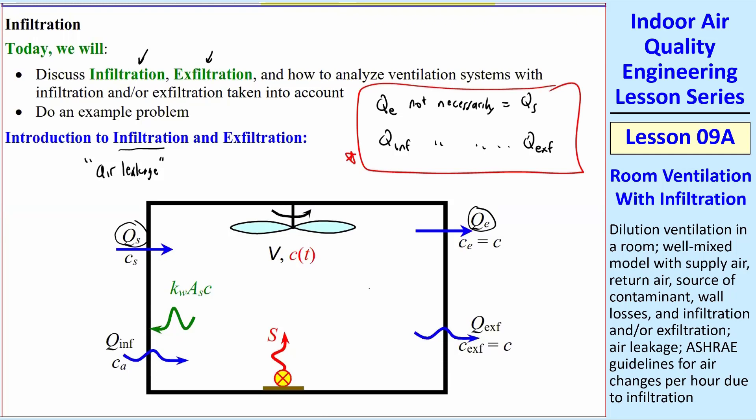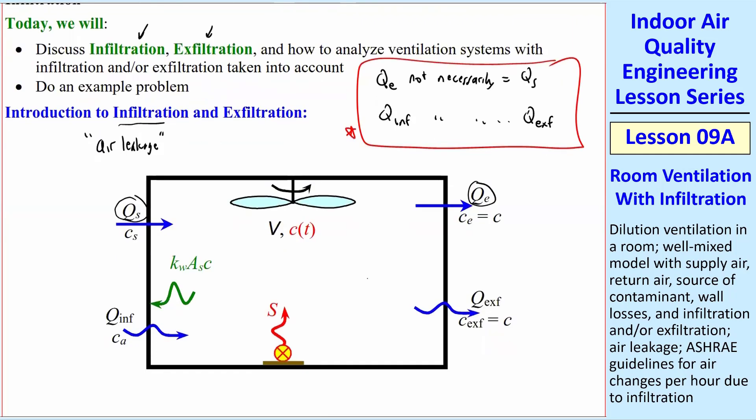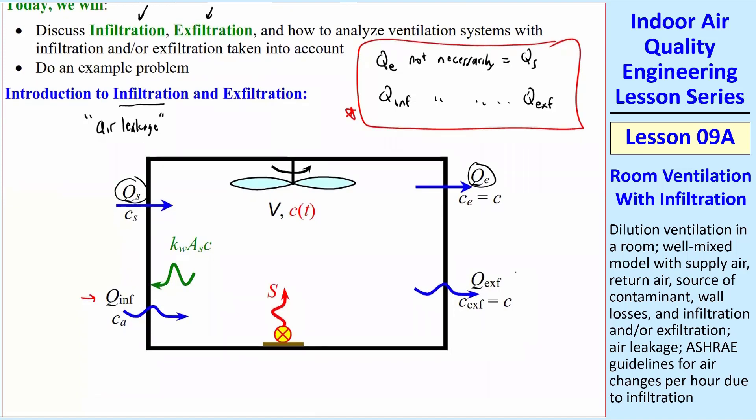For example, if you have a room at a much lower pressure than atmosphere, then you're only going to have Q infiltration. You won't have any exfiltration. If the opposite is the case, you have a high-pressure room, you're not going to have any air coming in from outside, only air going outside. That will be exfiltration.